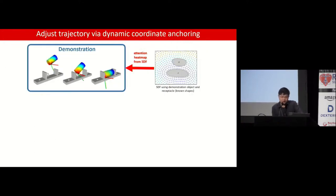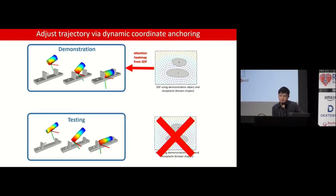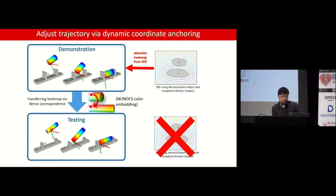To get this attention heat map: during the demonstration, we know the complete shapes of training objects under the receptacle, so we obtain an implicit signed-distance field of the receptacle and look up the signed-distance values of the objects. Intuitively, the nearest group of points and contact points are the most task-relevant, so we derive a heat map based on their signed-distance values. During testing, we no longer have the shapes for the novel unseen instance, so instead we transfer the heat map using the dense correspondence obtained with NUNOX.